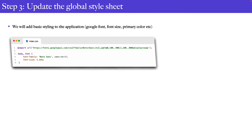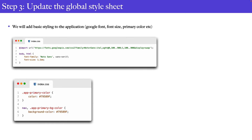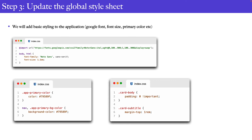The third step is to update the global stylesheet, which is the index.css file. Inside this, we are going to add Google Fonts, font size, and primary color. We will apply the font family to the body and HTML, add the primary color to our application, and add custom styling for the card body and card subtitles.